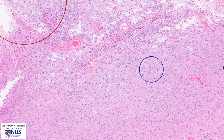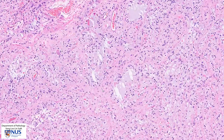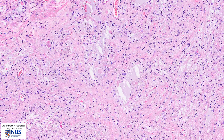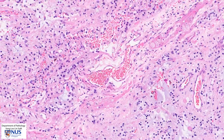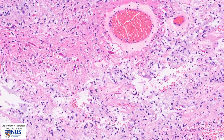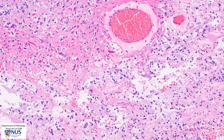In summary, we have here a pilocytic astrocytoma, which is a WHO grade 1 tumor. It is a biphasic tumor with pinker, compact areas composed of neoplastic astrocytes with fibrillary processes, and looser microcystic areas in between. We also see eosinophilic granular bodies as well as frequent Rosenthal fibers. Thank you.